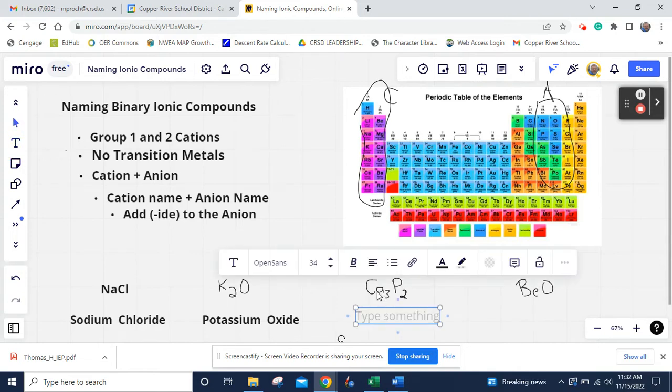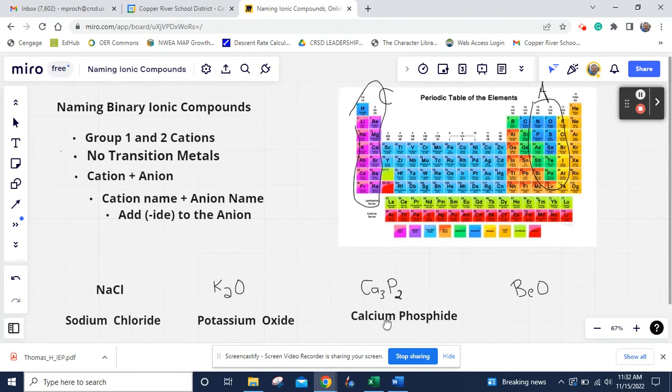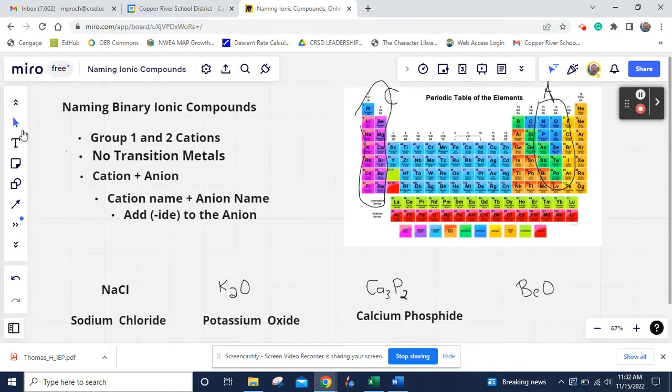So here we have this one. Ca, we know that's calcium. Then we're going to add the P, phosphorus, but then we have to put that suffix on there. It's calcium phosphide. That's the name of it.